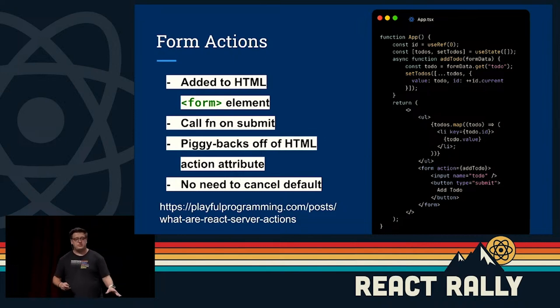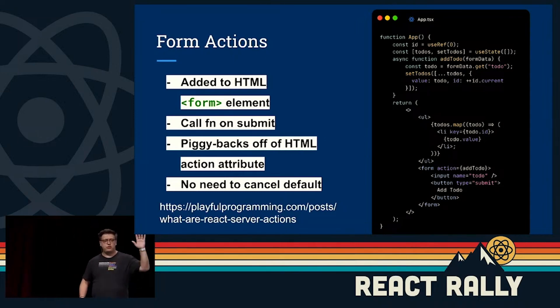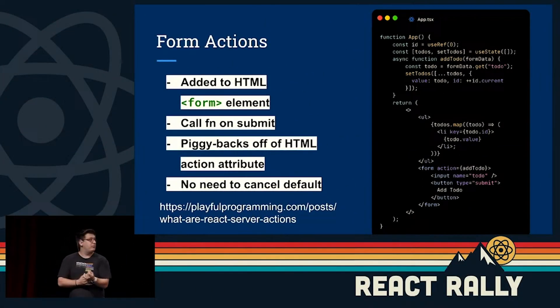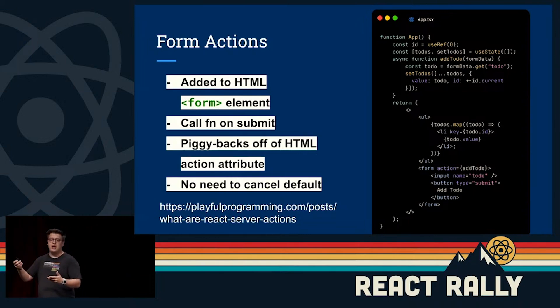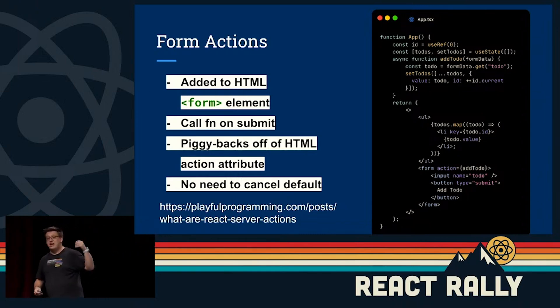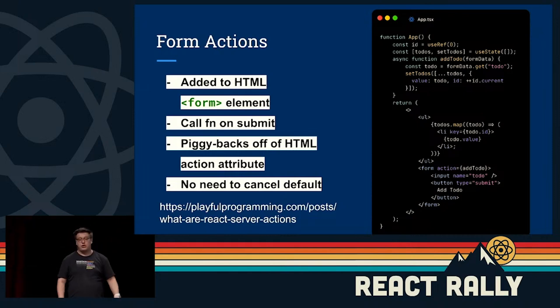Let's talk about form actions. Raise your hand if you've heard of progressive hydration or enhancement — where JavaScript goes down and your application should still work. You might be familiar with the action attribute on a form element in HTML, which sends a REST request to your server and returns some JSON. Instead of the traditional React approach of onSubmit with an event and preventDefault, you can just have a submit button, grab the form data, use it to add to the to-do, and you're off to the races.